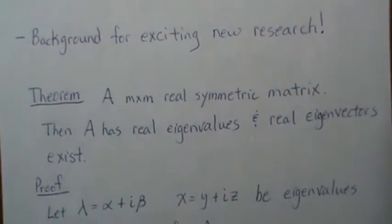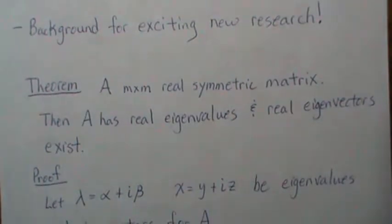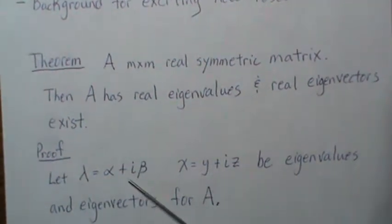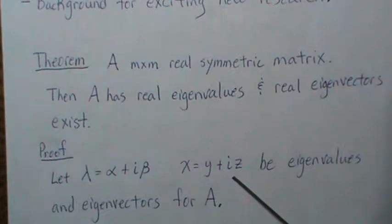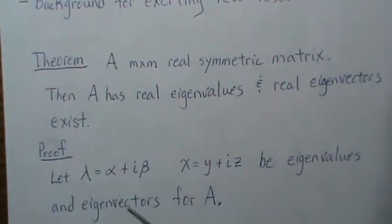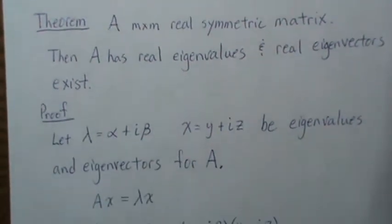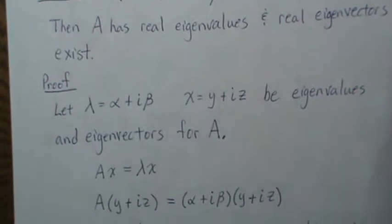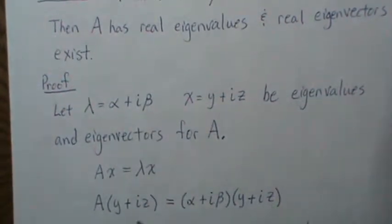The proof is: let's assume that our eigenvalue and eigenvectors are complex, not real. That means this is the relationship for eigenvalues and eigenvectors, and if we plug in our assumption that they are complex eigenvectors and eigenvalues we get this.